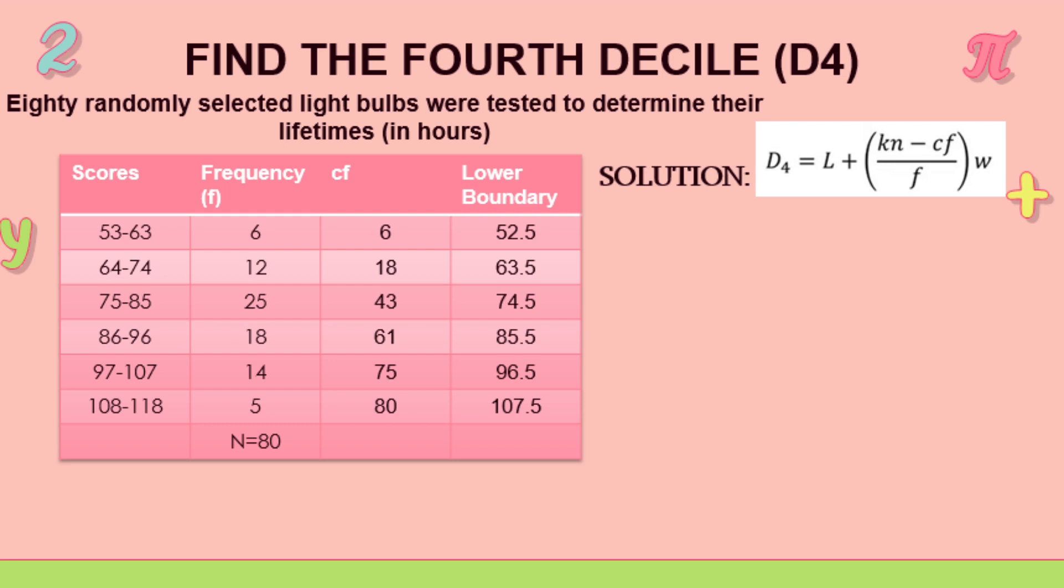So 80 randomly selected light bulbs were tested to determine their lifetimes in hours. So we have, this time we start at the top. We have 53 to 63, 64 to 74, 75 to 85, 86 to 96, 97 to 107, 108 to 118. So our frequency is 80.